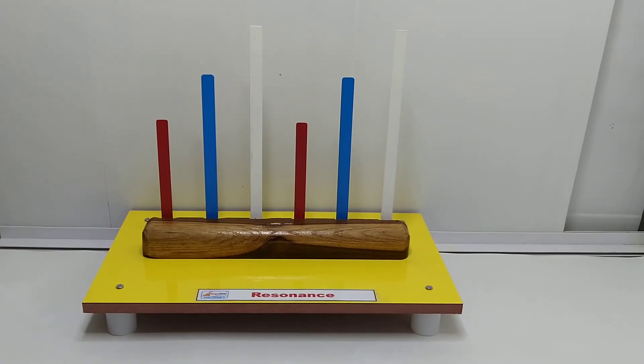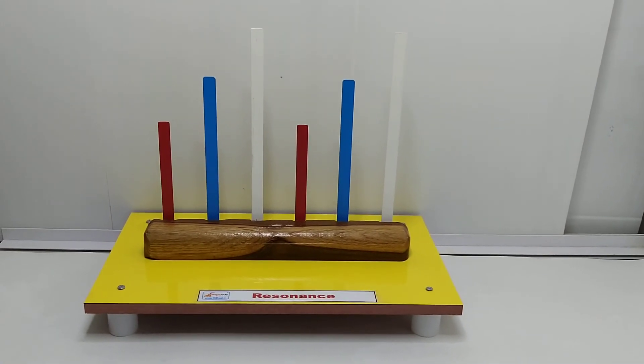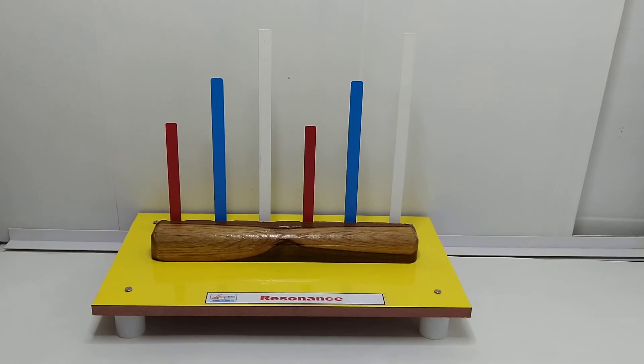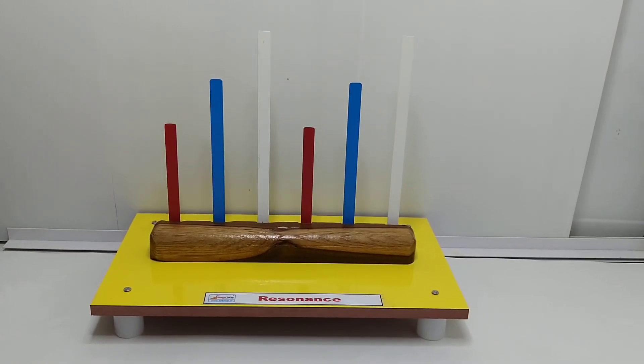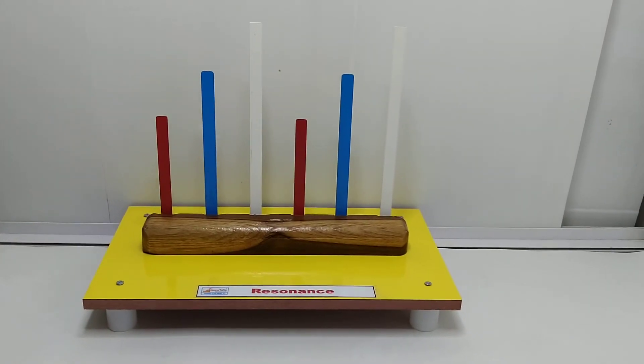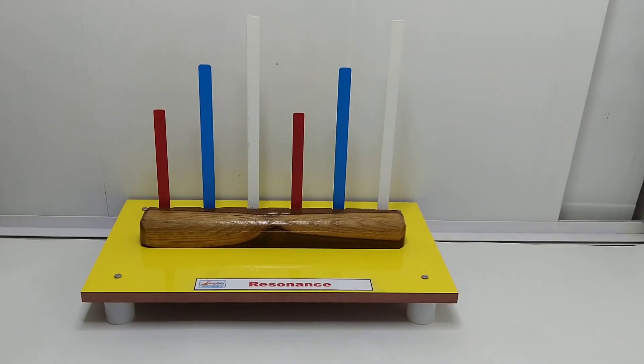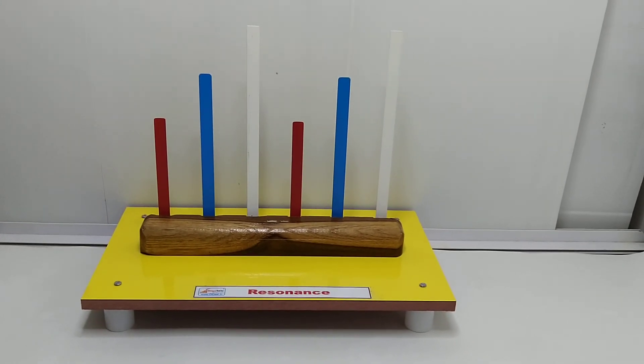The vibration has the largest amplitude compared to the other two strips, that is blue and red. Now both white strips together vibrate with the same frequency, and this is called resonance.